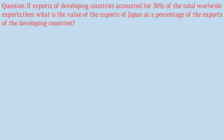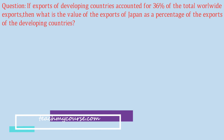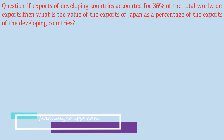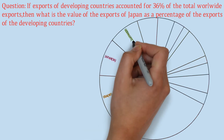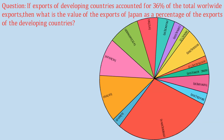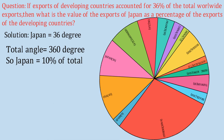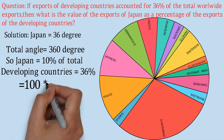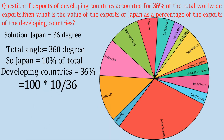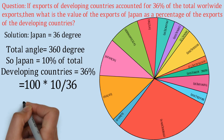The next question says: if exports of developing countries accounted for 36 percent of the total worldwide exports, what is the value of exports of Japan as a percentage of the exports of the developing countries? Japan covers 36 degrees out of 360 degrees, which means Japan is 10 percent of the total. The developing countries account for 36 percent of the total. We can directly compare these percentages — no need for lengthy value calculations.